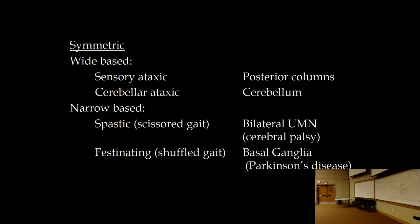Festinating or shuffling gait is seen in Parkinson's disease. The patient cannot take a normal step stride — the stride becomes narrower and narrower, eventually shuffling along. Patients also experience gait freezing, where feet suddenly lock up and cannot move, often occurring when walking through narrow spaces like doorways.